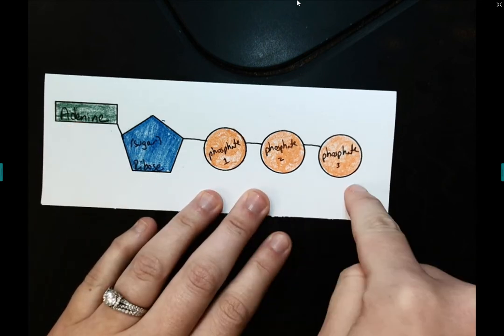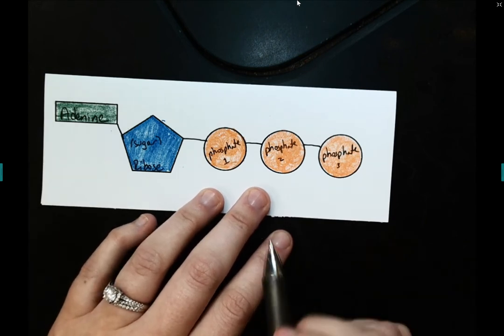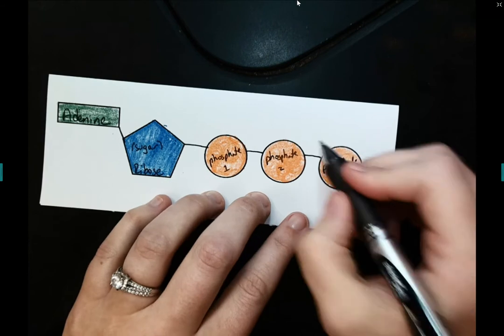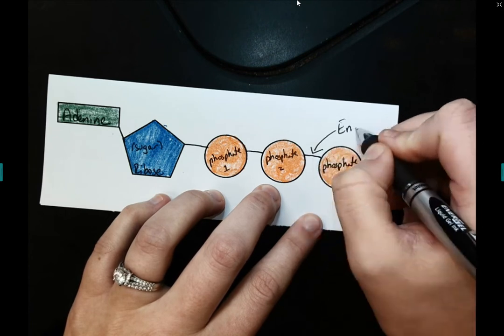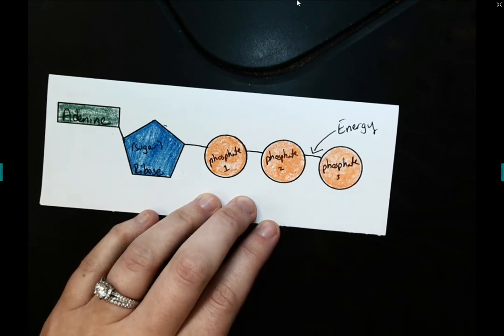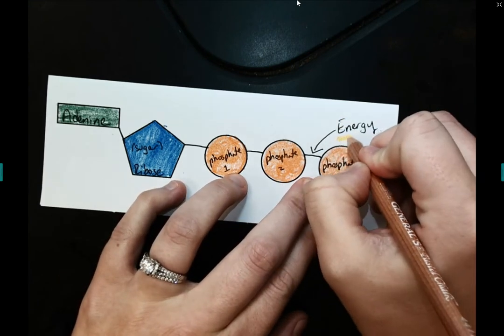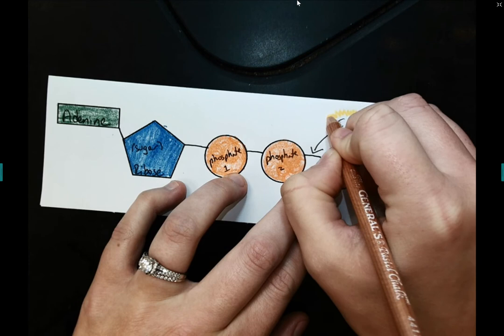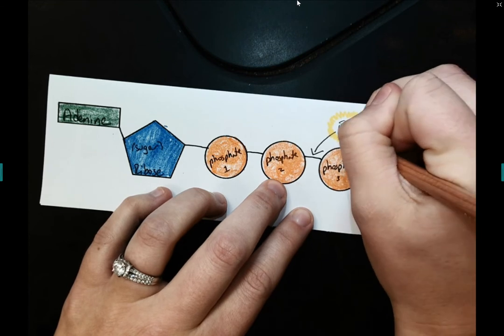So these are our three parts to our ATP molecule. Now, we know that ATP is the energy source for the cell. Now, specifically, the energy is stored in this last bond. So the bond between the second and third phosphate is where specifically the energy is stored. So I have labeled it and now I'm just going to use my yellow colored pencil to make this energy stand out. Perfect.